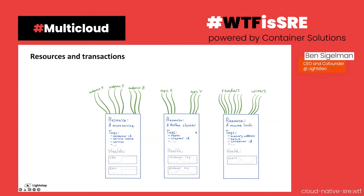Resources are consumed by transactions, which are the things that actually do work in your application. No end user of cloud native software really cares about your resources — what they care about is their transactions. Transactions usually start with a client somewhere, whether it's an SDK, mobile device, or web browser, and propagate throughout many different resources before completing their work. Like resources, transactions can also be described at many different scales — HTTP calls, function calls, or even individual CPU instructions.